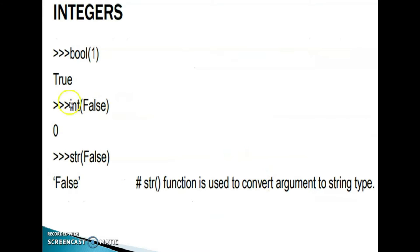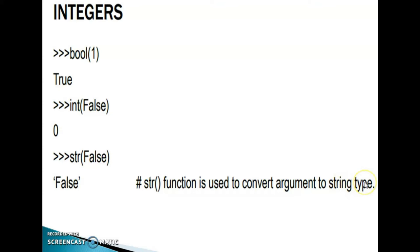Examples: bool(1) gives true. int(false) — this false is 0, so we can identify the value 0. str(false) — here false is treated as a string value. The str function is used to convert the argument to string type, so false is considered as a string value.